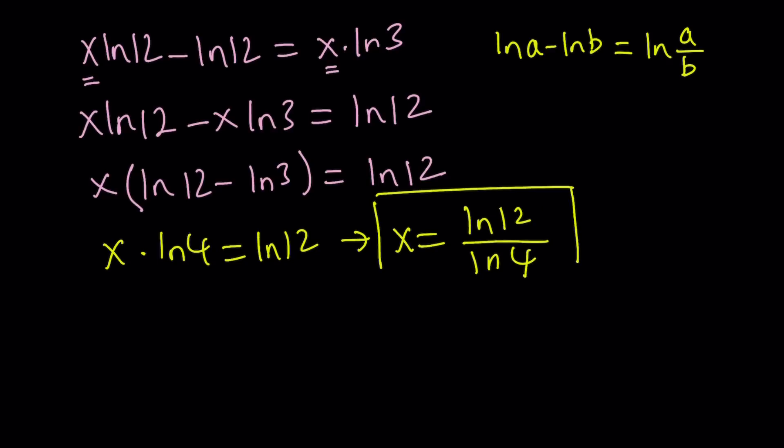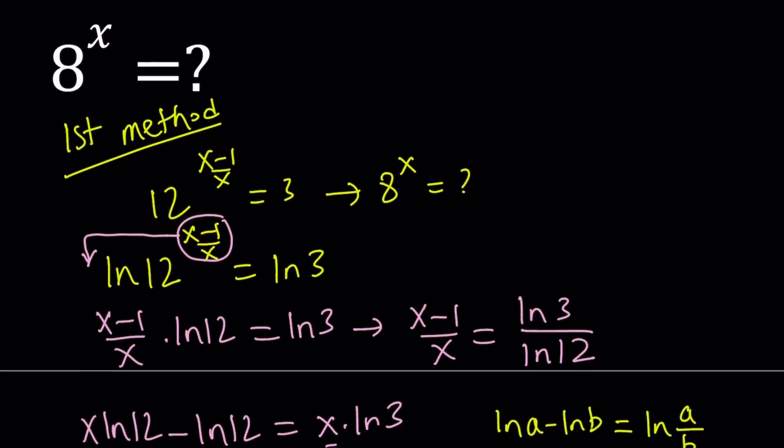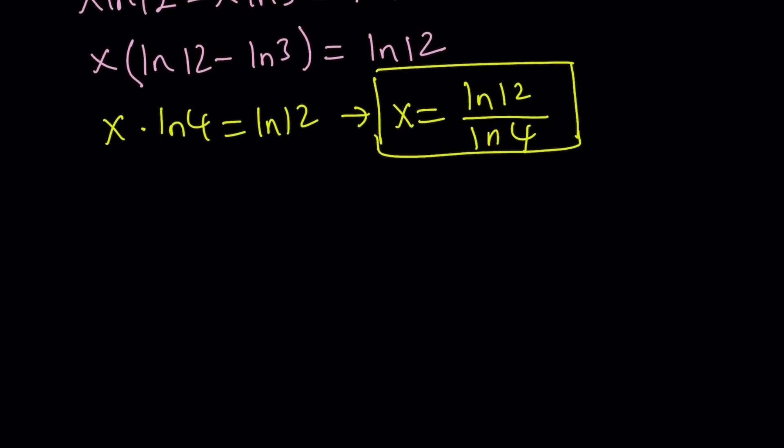From here we can write x as ln 12 over ln 4. Let's leave it like that. You don't have to simplify anymore. Now we're going to deal with the question. The question is asking for 8 to the power x, and we know what x is. We don't need a numerical value, we can leave it like that. That's the exact value, because if you evaluate it with a calculator, it's not going to be exact.